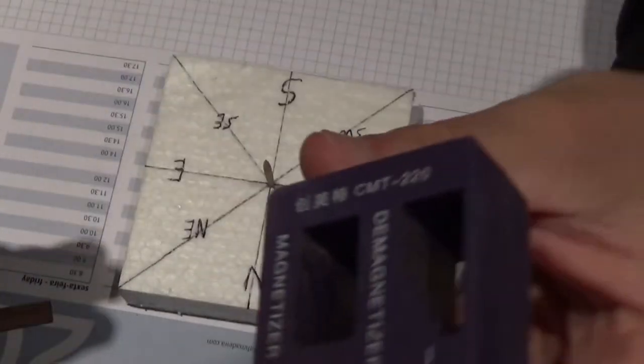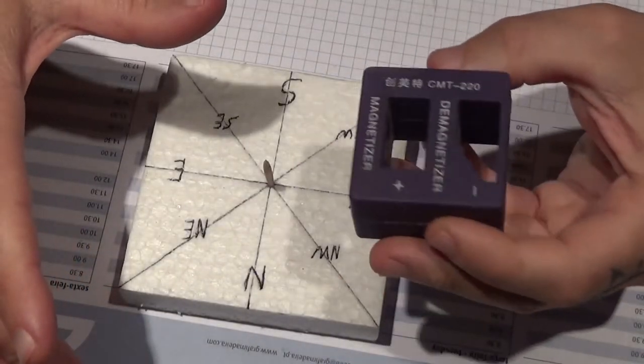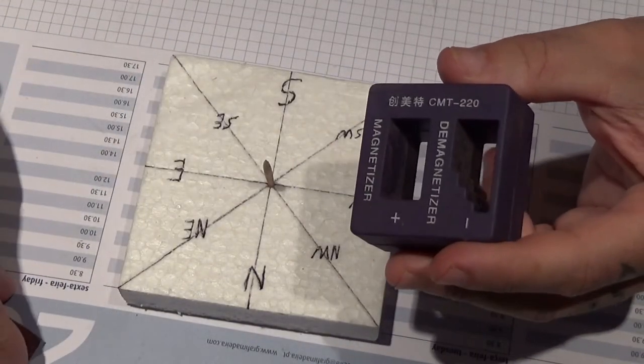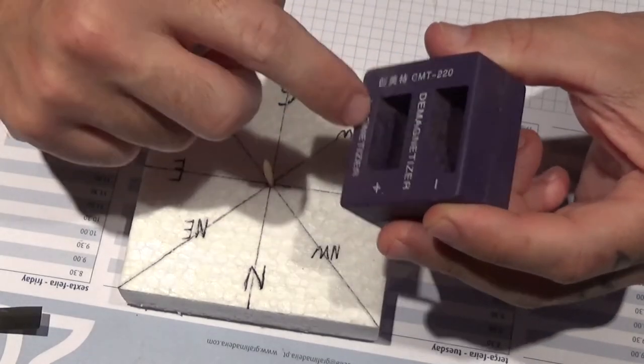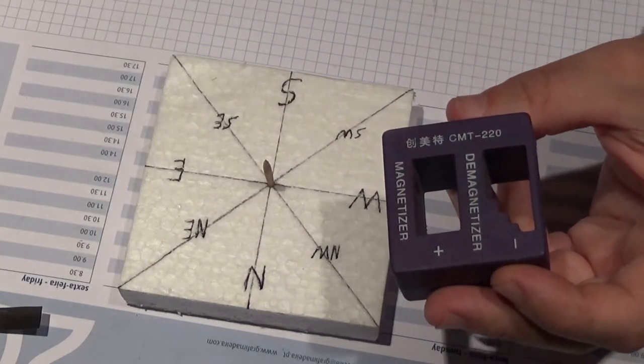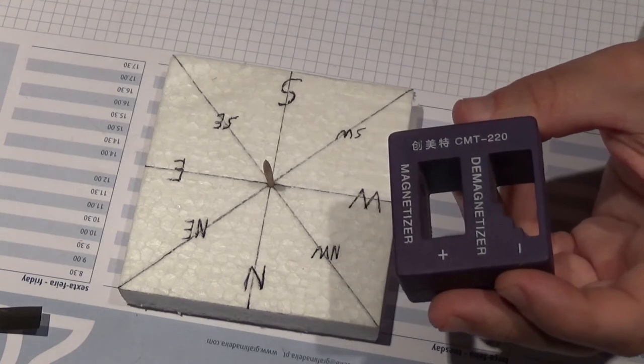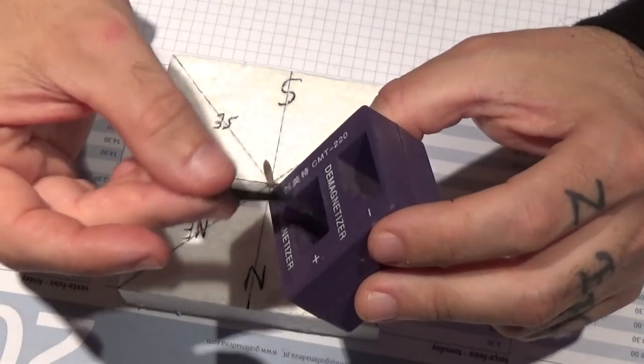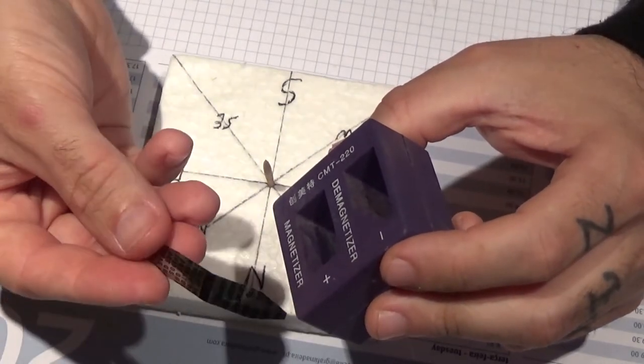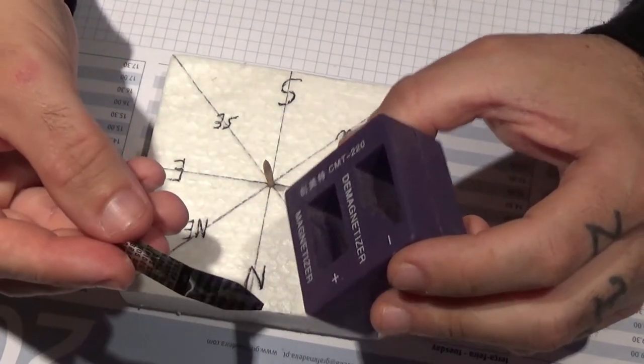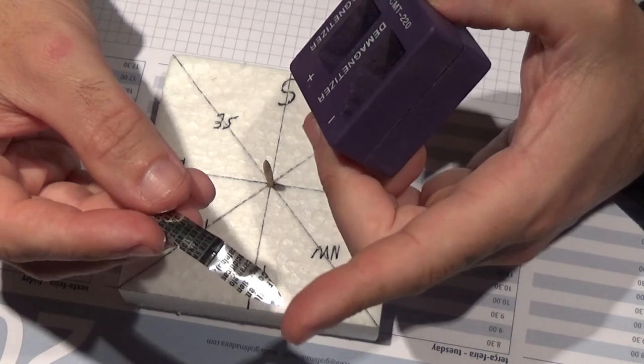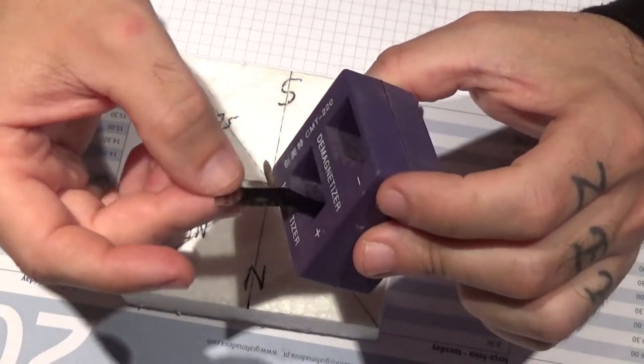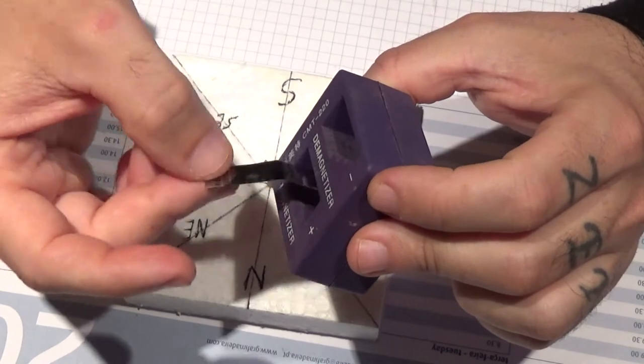I'm gonna pick up my magnet, in your case, your magnet, in my case, my magnetizer. I got a demagnetizer side and a magnetizer side. If you don't have it, just use a magnet, a regular magnet, and I'm gonna magnetize the side which I want to be the point of the arrow. So, I'm gonna magnetize it.